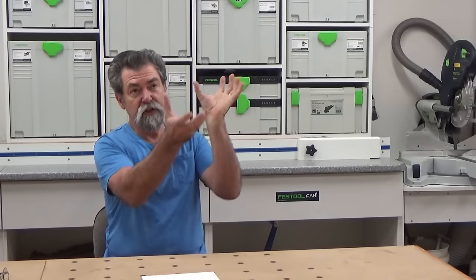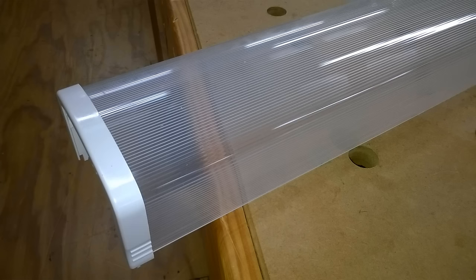Now one of the other things in this workshop is all of my lights have got what's called a diffuser fitted to them. Now diffuser is a plastic shield that sits around the pair of tubes. That's there for two reasons. First reason is to protect the bulbs.